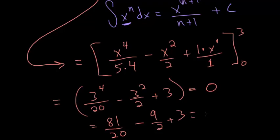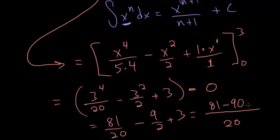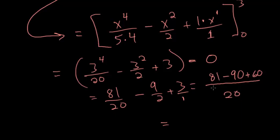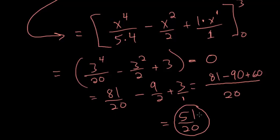We give everything a common denominator of 20. So we have 81/20 minus 90/20 — since 9/2 multiplied by 10/10 gives 90/20 — plus 60/20, since 3 times 20 gives 60. Combining: −90 + 60 = −30, and 81 − 30 = 51. So the final answer is 51/20, which does not simplify further. This is the area under the curve from x = 0 to x = 3.